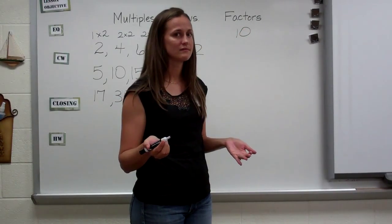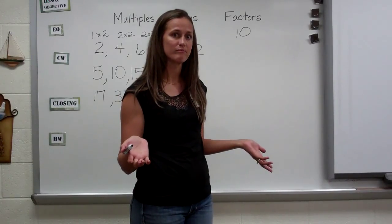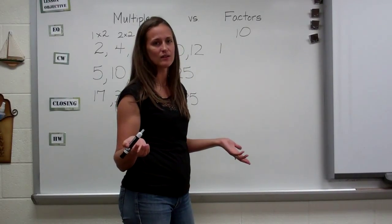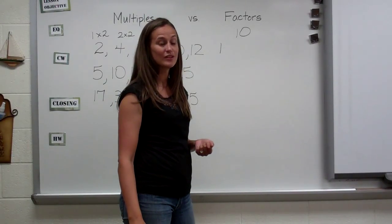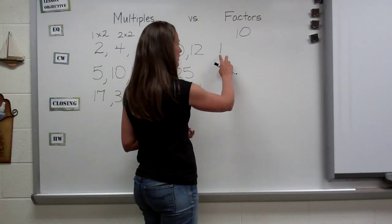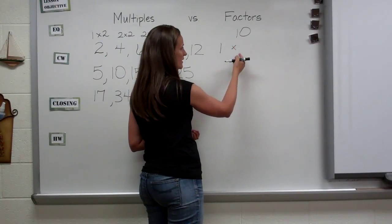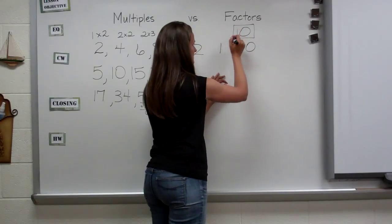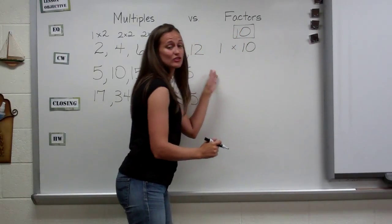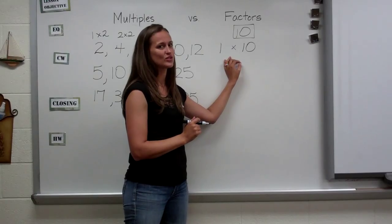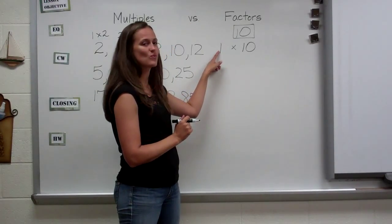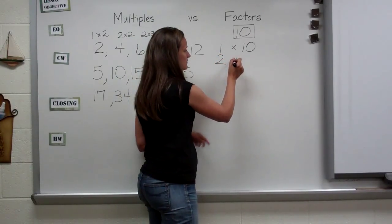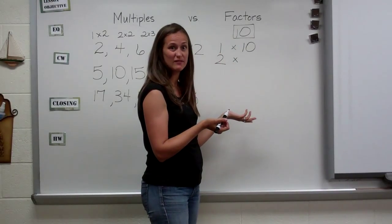All factors have one. One times that number always works out. Would zero work? No, because your answer's going to be zero. So we're going to do one times what gives me ten? Ten. This is how I do it — not everyone does it. A lot of people list it out just like with multiples, but I like to start here so I don't miss any numbers. The next number after one numerically is two, so I'm going to try two. Two times blank gives me ten.